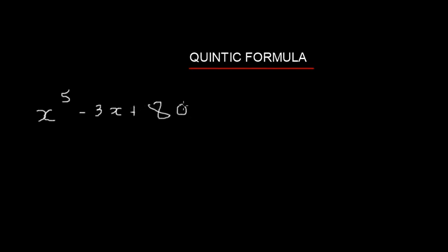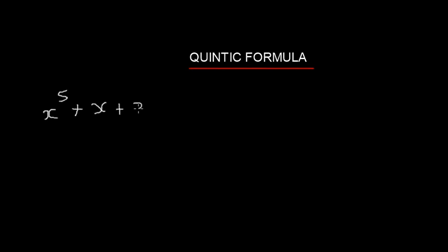Hello everyone. Because of the Galois theory and Abel-Ruffini theorem, it is impossible to solve a quintic equation like x to the power of five minus 3x by radicals. It's impossible. Just using hypergeometric functions you can solve this type of equation, but by radicals you can solve using a specific equation.